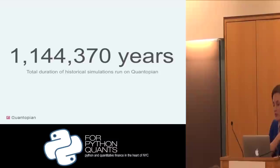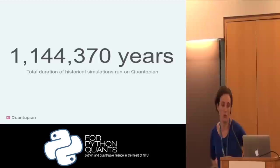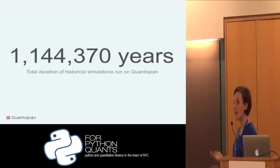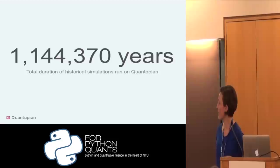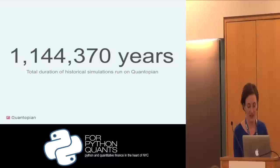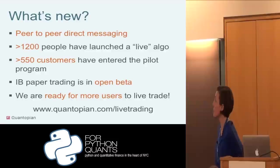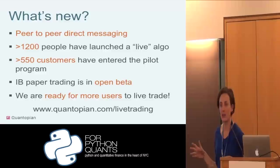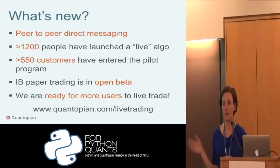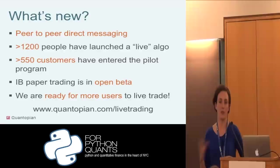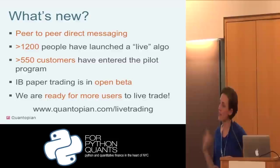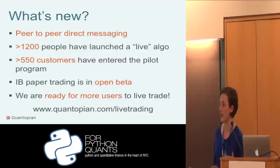We're really starting to see what happens at scale. We've just rolled out peer-to-peer direct messaging. We have a lot of people on the platform who may use their real name or not — they work at a fund and do this as a hobby. As of last week, if someone posts something in our forums and you think it's interesting, you can go to their profile and send them a message, and if they want to, they can email you back.